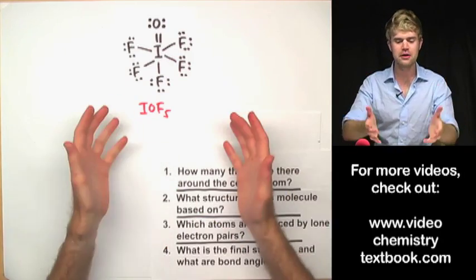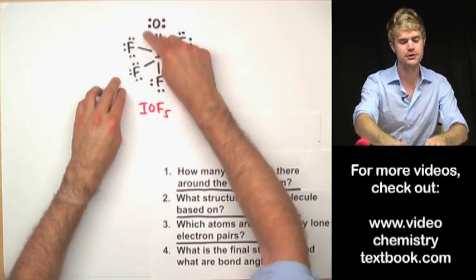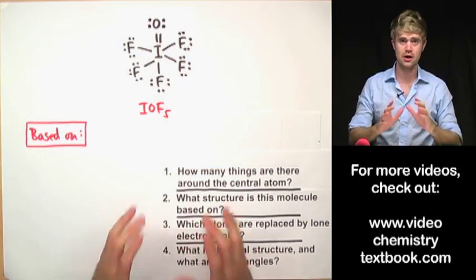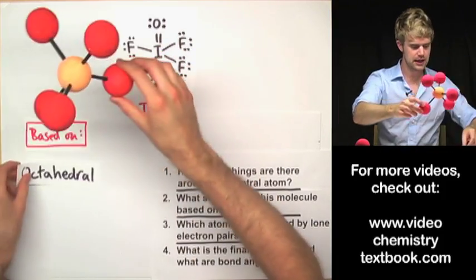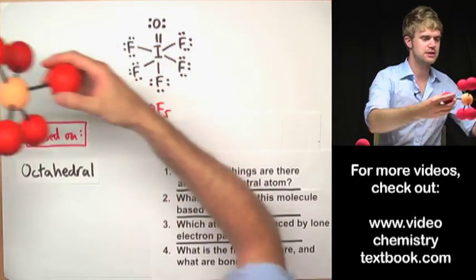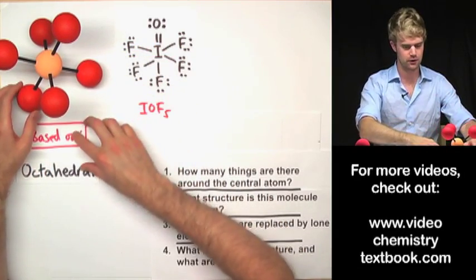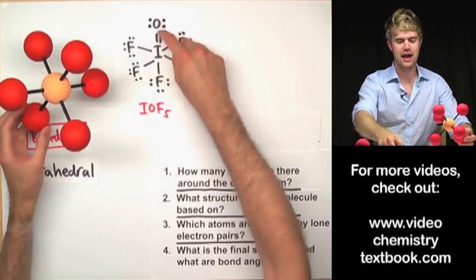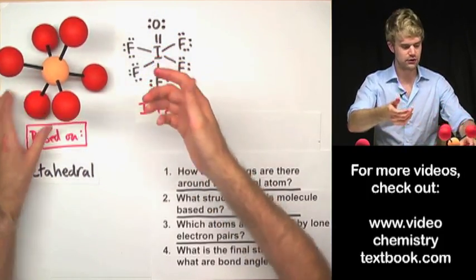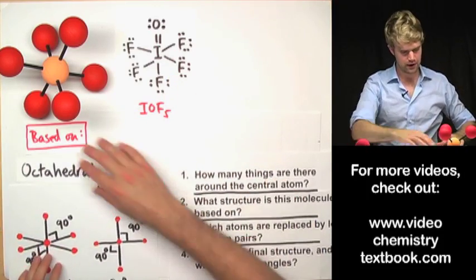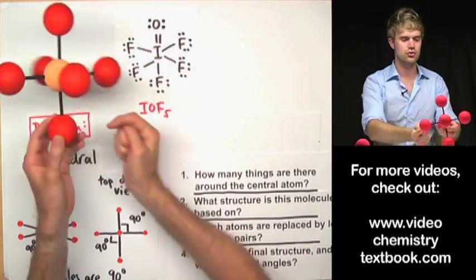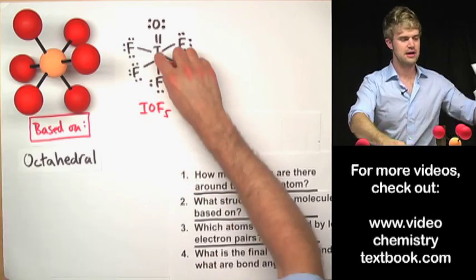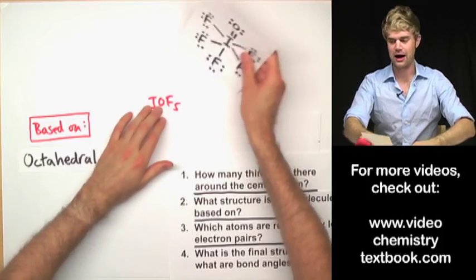IOF5. First: how many things are around the central atom? There are six bonds — remember double bonds and single bonds count the same. Six bonds around the central atom. So what molecule is it based on if there are six things around the central atom? It's based on an octahedral molecule. Now, which atoms are going to be replaced by lone electron pairs? None, because there are no lone electron pairs in this molecule. So every atom stays in place and the final structure is octahedral. Every angle in an octahedral between any two bonds is 90 degrees — all right angles.